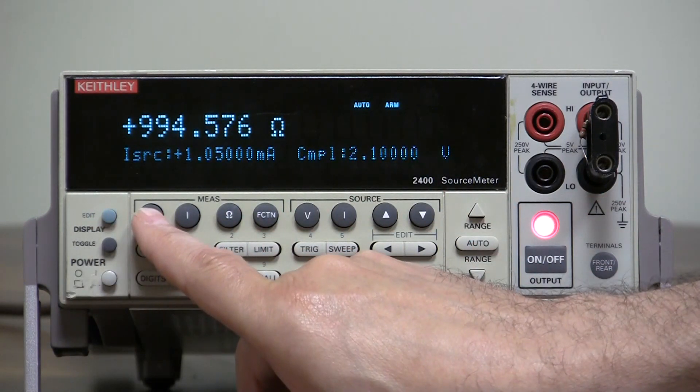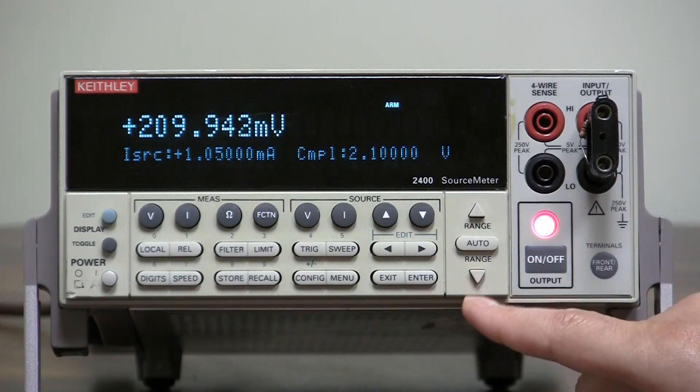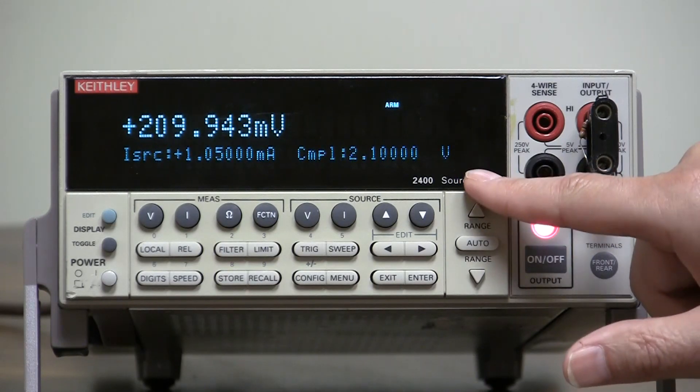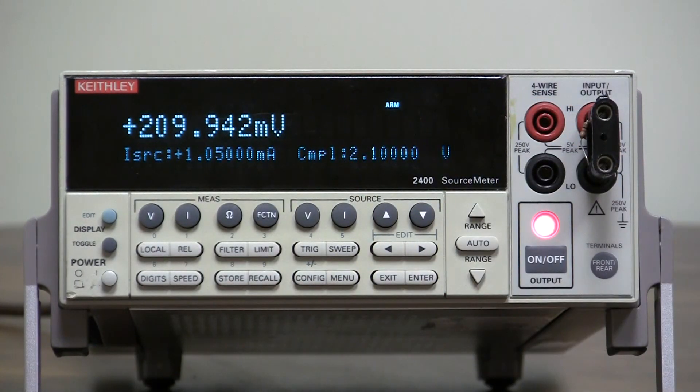But, what we do is go to measurement range, a voltage, go down a range, and notice the V is flashing. It's trying to say I can't measure that 1 volt on the 200 millivolt range. So, range compliance is on the measurement range.